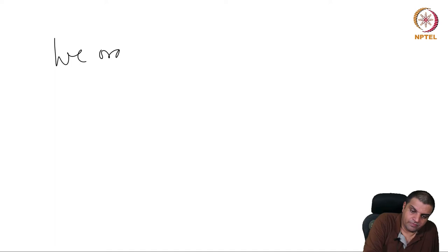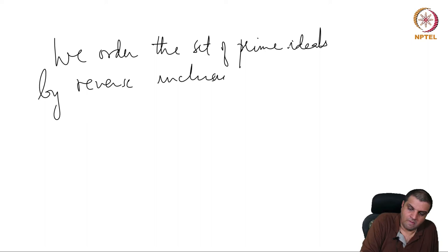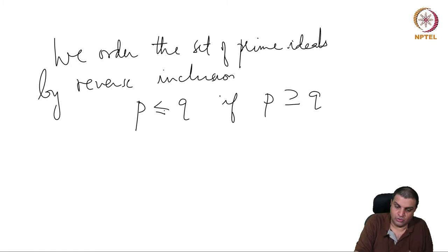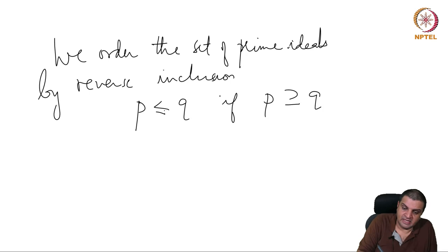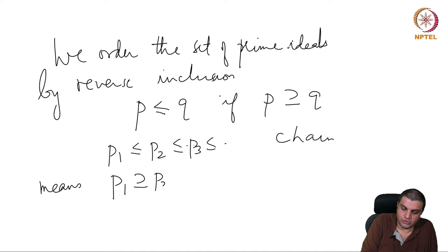We order the set of prime ideals by reverse inclusion — we say P is less than or equal to Q if P contains Q. Then observe that if P_1 ≤ P_2 ≤ P_3 ≤ ... is a chain, in other words P_1 ⊇ P_2 ⊇ P_3 ⊇ ..., we intersect them. We want to show that the intersection is a prime.